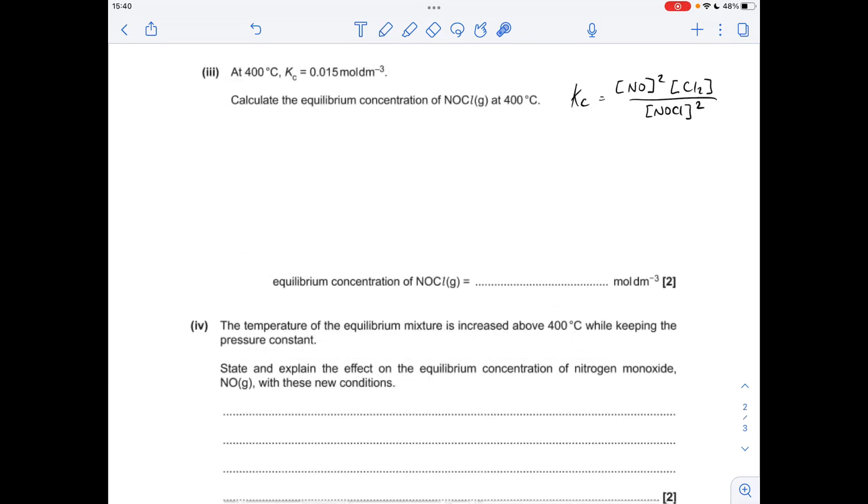Next part, we've got to work out the equilibrium concentration of NOCl. So this term here. So basically, we're going to rearrange the Kc expression and solve for this. So there it is rearranged. I've kept the squared sign with the NOCl. We'll deal with that at the end. So putting the numbers in, we get NOCl concentration squared equal to 1.31. So we just need to square root that, which gives a concentration of 1.14 moles per decimeter cubed.